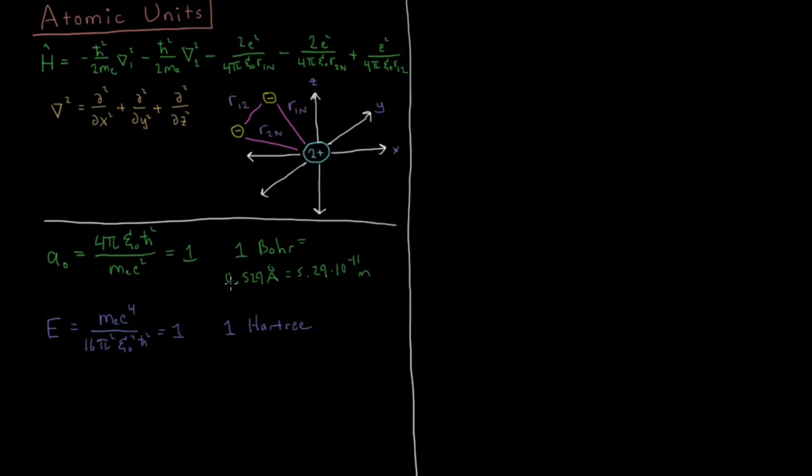And this unit is going to be called 1 Hartree after physicist Douglas Hartree. And I'm going to write this in several different units since it's very important to be able to do unit conversions for energy. So this is going to be equal to all of the following: 4.36 times 10 to the minus 18th joules, 2626 kilojoules per mole, and kilocalories per mole which is just a quick conversion from kilojoules to kilocalories, 627.5 kilocalories per mole, or also if you see the unit electron volts it's 27.2 eV or electron volts.